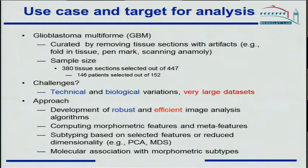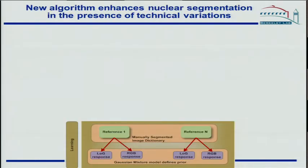To address these issues, we developed a collection of algorithms for characterizing tissue sections. They need to be efficient to address the large data sets. Having done that, we compute a number of features and meta-features, then proceed with feature selection or dimensionality reduction, and then proceed with the morpho-molecular association. We built a database of dictionaries using about 20 reference images hand-segmented by an undergraduate student.